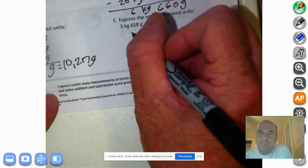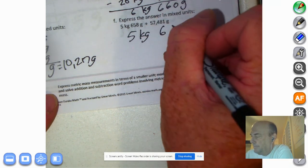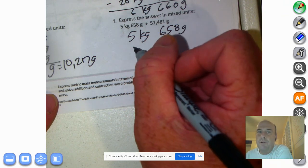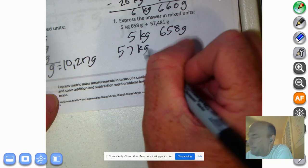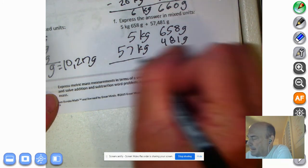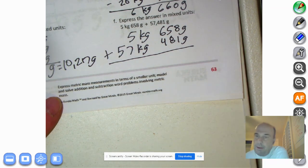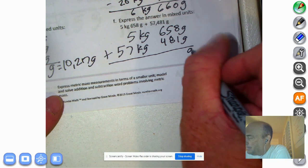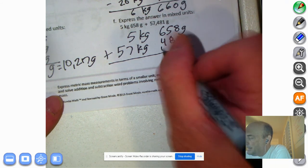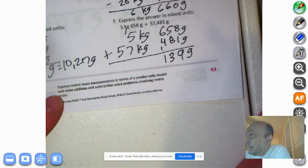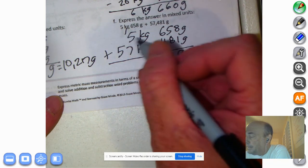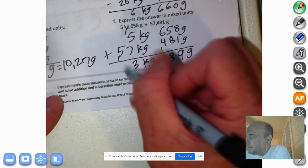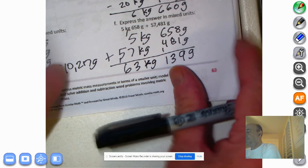All right. Mixed units. We have 5 kilograms, 658 grams. We'll have to space there in case we have to decompose. Plus 57,481 grams. That's 57 kilograms, right? 481 grams. And we're adding. Go ahead and pause the recording and do the math on your own. Welcome back, boys and girls. Ladies and gentlemen, damas y caballeros as we tackle this problem. I'm going to bring down my unit of measurement. 8 plus 1 is 9. 5 plus 8 is 13. 6 plus 4 is 10. Plus 1 is 11. Look at it. I've got to bring over that because it was 1,100. So now we have a kilogram. Bring down my kilogram measurement. Kilogram. 6 plus 7 is 13. And 5 plus 1 is 6. We have 63 kilograms, 139 grams.